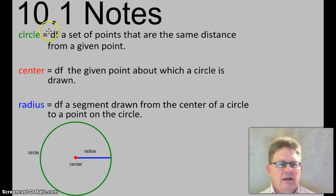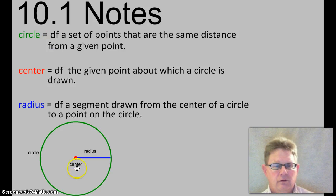This equal df here just means is defined as. So when you read that, just think a circle is defined as a set of points a given distance away from a point. The center is the given point, and the distance away, a segment drawn from the center to a point on the circle, is called the radius.